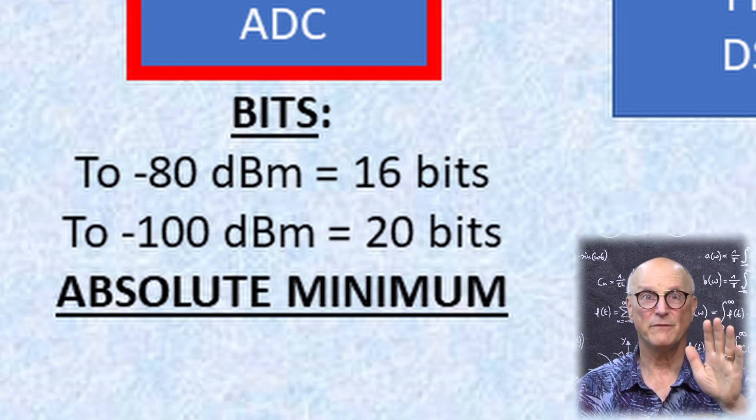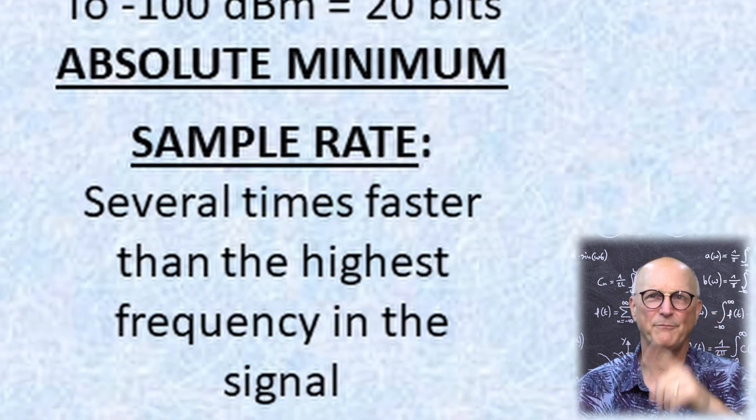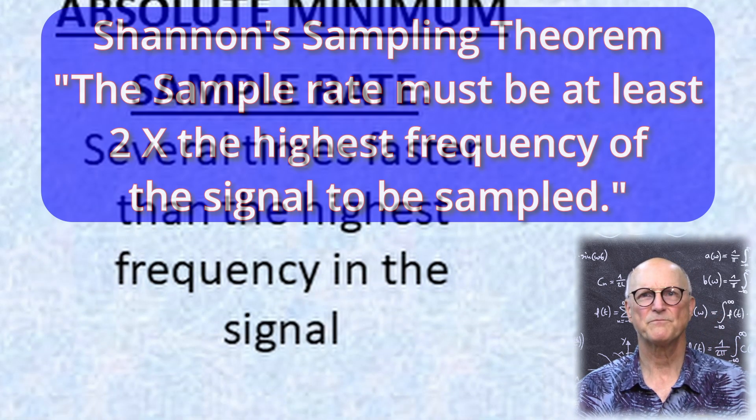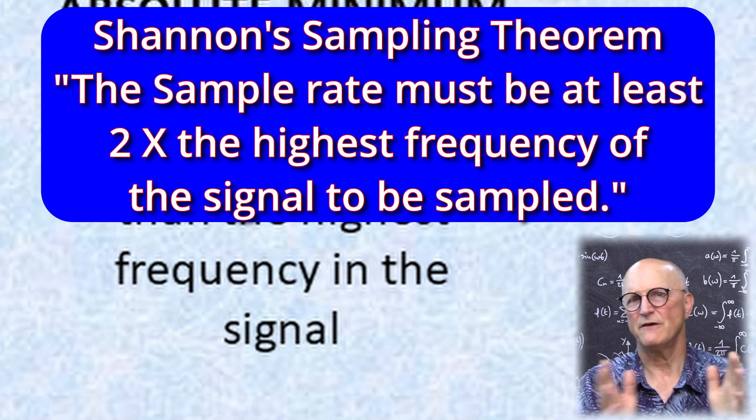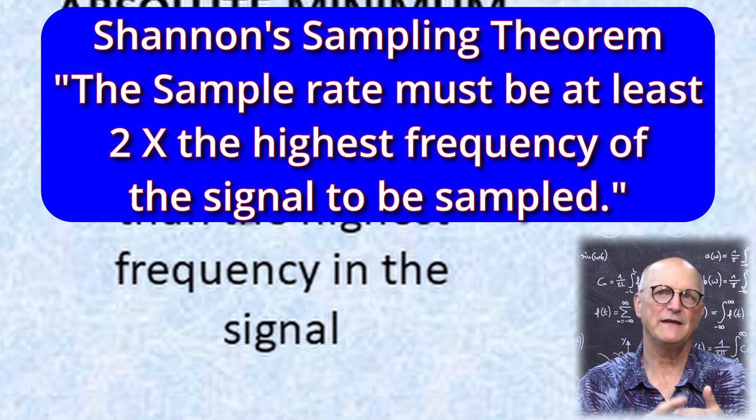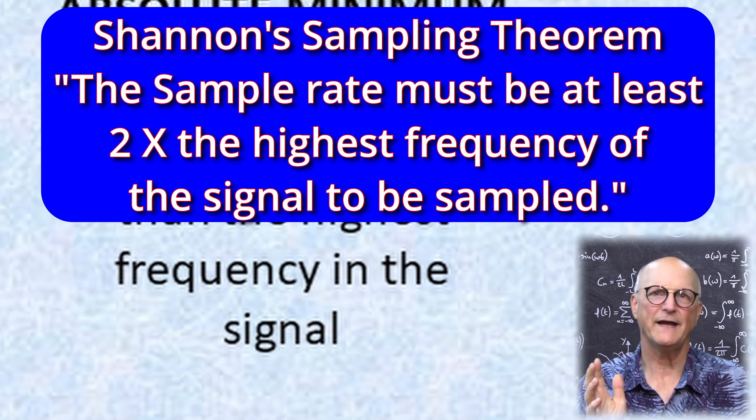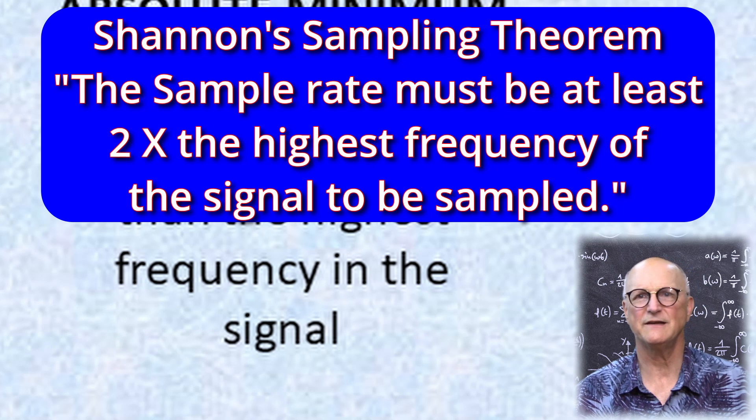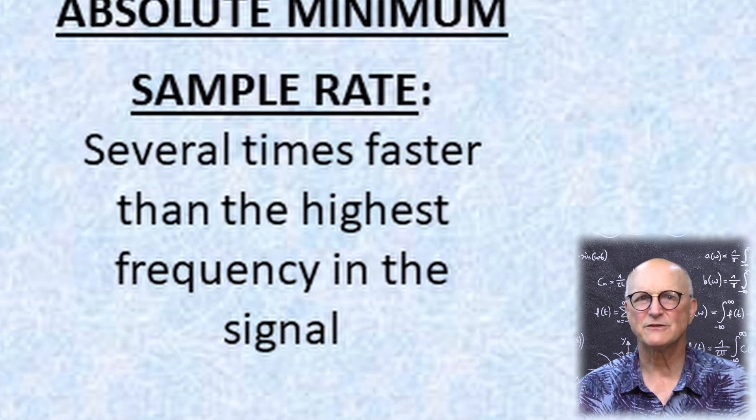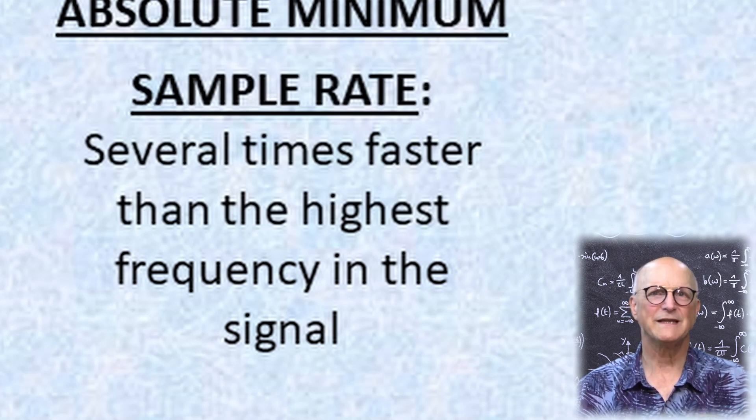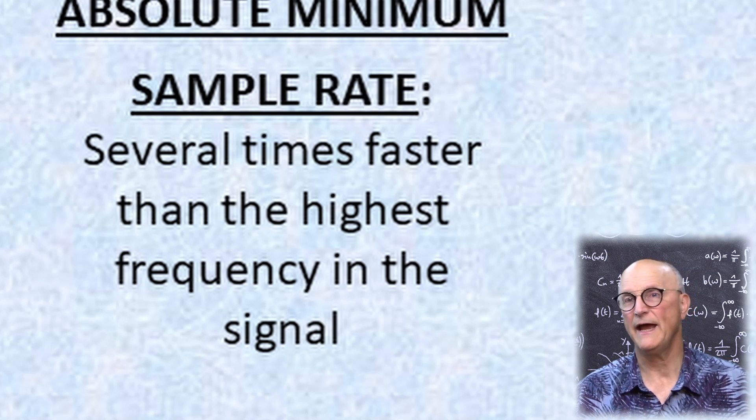Now with this in mind, let's talk sample rate in our ADC. According to Shannon's law of sampling, the sample rate needs to be only twice the highest frequency contained in our signal. But various factors involved in the process would lead to erroneous results if this is all we had.